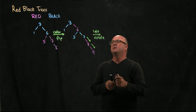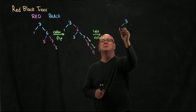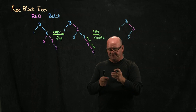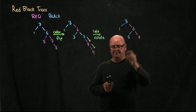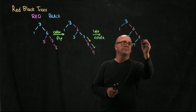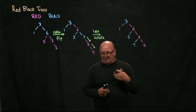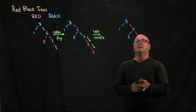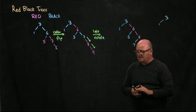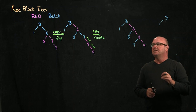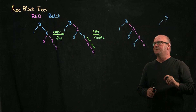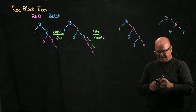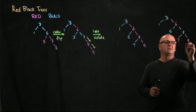After the rotation, we reset the colors. The way we reset the colors is we make the parent black and the two children red. So the 8 will be black and the two children, the 7 and the 9, will be red. The 6 stays red, the 5 is down here, the 8 is black, and the 7 and the 9 are red.